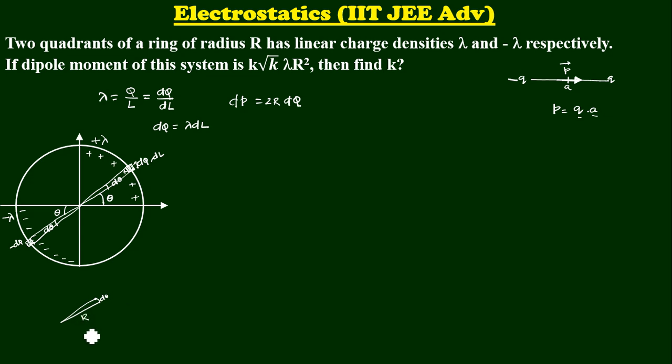Now, it is having a radius R. Then, the arc length DL is going to be, this is D theta. DL is going to be R D theta. R is the radius of this arc and angle subtended by this arc is nothing but D theta. Now, can I substitute that DL here? Lambda R D theta. That is your DQ.